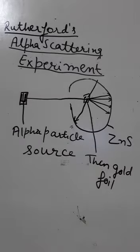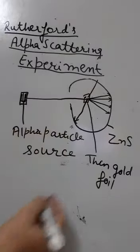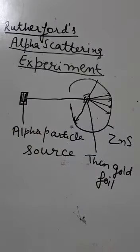What Rutherford observed during this experiment: he observed that most of the alpha particles passed through the foil without any deflection from their path.